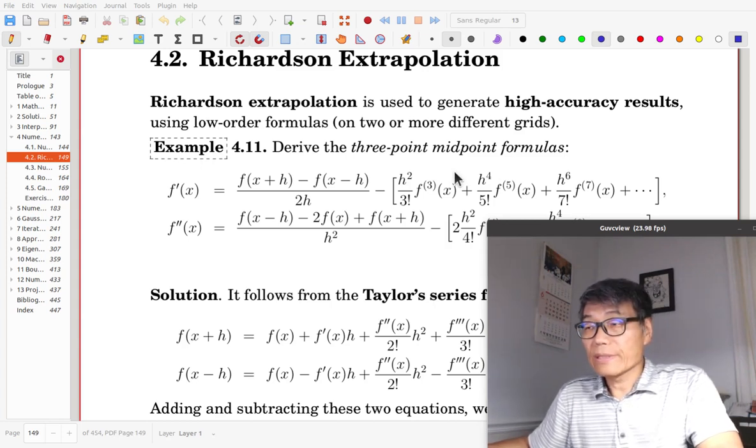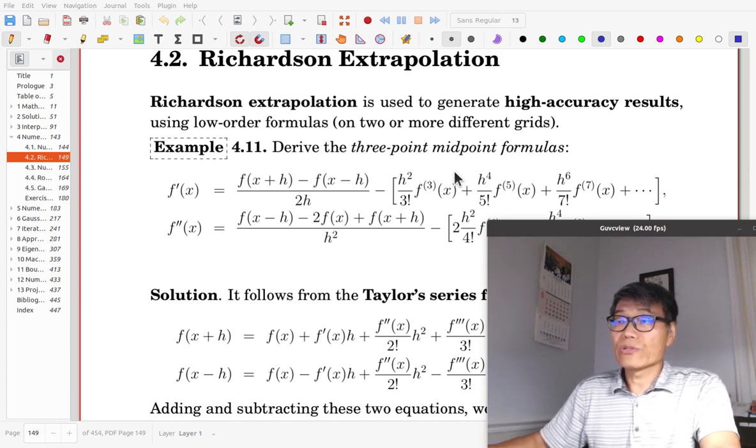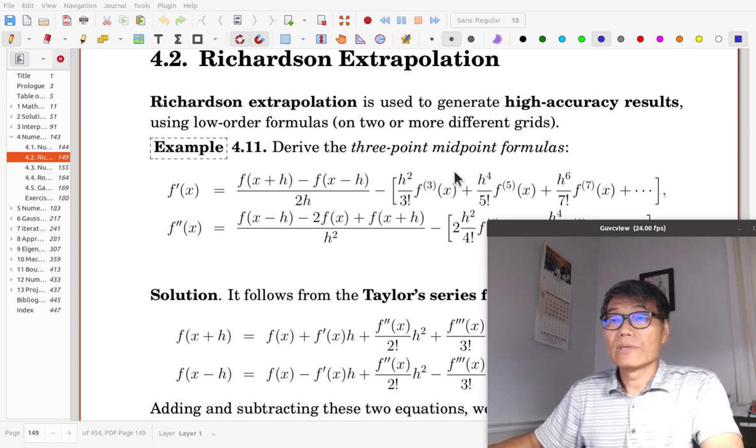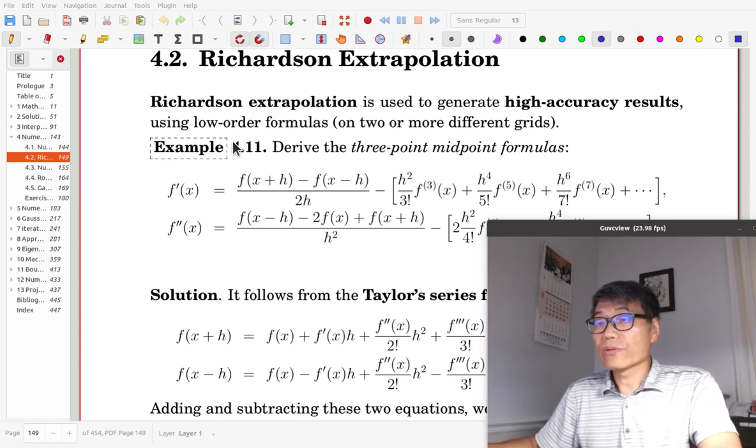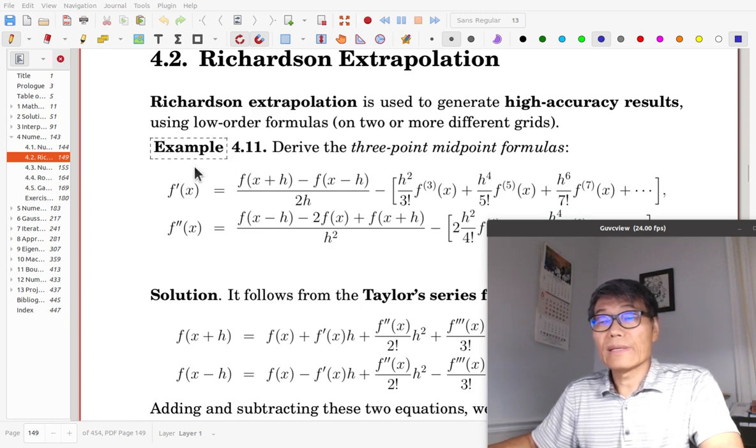It is Section 4.2, Richardson Extrapolation. Richardson Extrapolation is used to generate high accuracy results using low-order formulas formulated on two or more different grid sizes. Let's see this example.